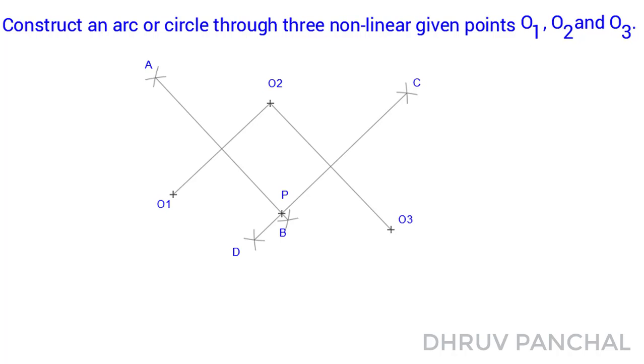With the help of compass, take point P as a center and distance between point O1P as a radius, and draw a circle which will pass through three non-linear given points O1, O2, and O3.